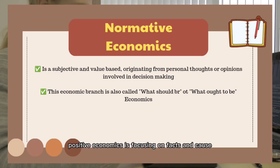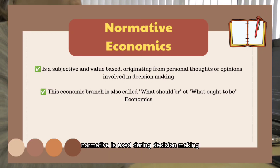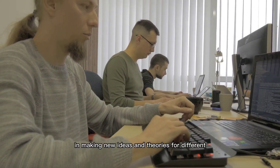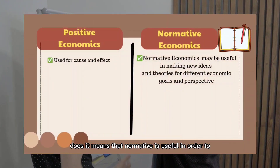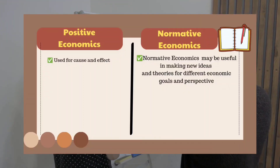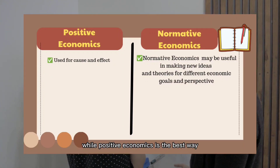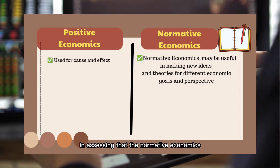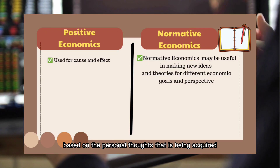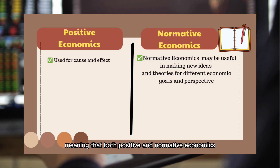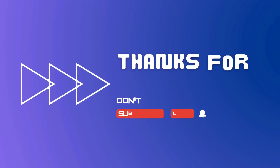Positive economics focuses on facts and cause and effect, while normative economics is used during decision making. Normative economics may be useful in making new ideas and theories for different economic goals and perspectives, meaning it helps create a better and more stabilized economic system. Meanwhile, positive economics is the best way to assess whether normative economics is useful or effective. Both positive and normative economics are very important in daily life.